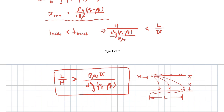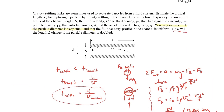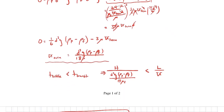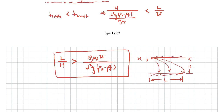There's one extra question: how will length L change if the particle diameter is doubled? Looking at the expression, diameter appears squared in the denominator. Doubling the diameter introduces an extra factor of four in the denominator, so the required channel length L decreases by a factor of four when the particle diameter doubles.